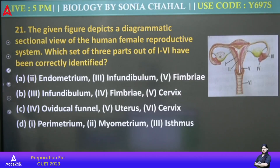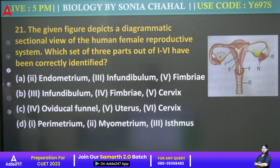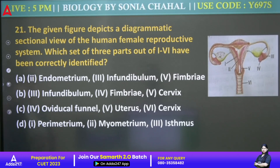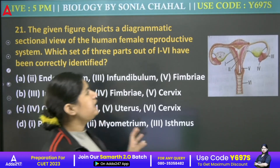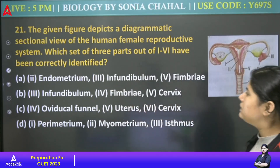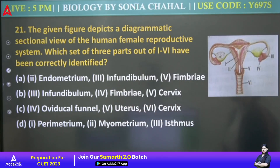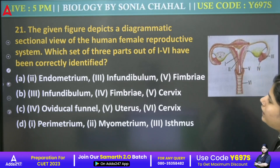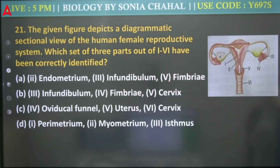Next: The given figure depicts a diagrammatic sectional view of the human female reproductive system. Which set of three parts from 1 to 6 have been correctly identified? Second is endometrium — okay. Third is infundibulum — that's true.